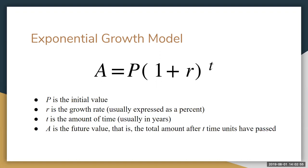T is the amount of time often in years. A is the future value, that is the total amount in the account or the total amount of population or whatever you're measuring after t time units have passed.